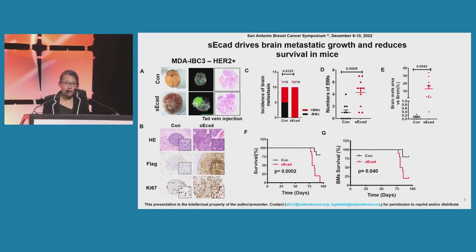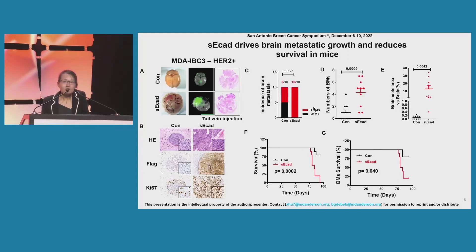We then moved to our in vivo work. We used MDA-IBC3 cell lines, generated by Dr. Wendy Woodward. This cell line can form brain metastasis through tail vein injection. We injected our control and soluble e-cadherin overexpression groups via tail vein. Our results show that the high soluble e-cadherin group had a higher incidence of generating brain metastasis, and significantly enhanced brain metastasis burden, including brain metastasis number and size. Moreover, the soluble e-cadherin group had worse overall survival and brain metastasis-free survival compared with control.